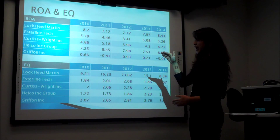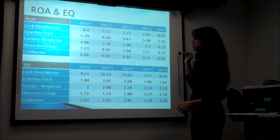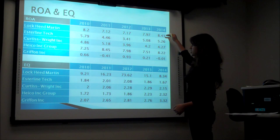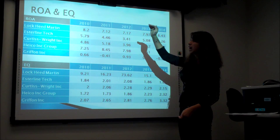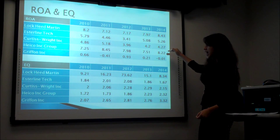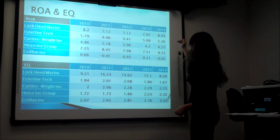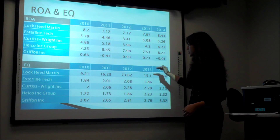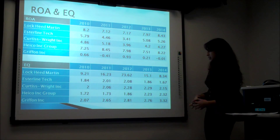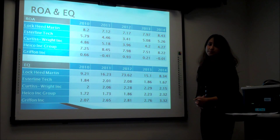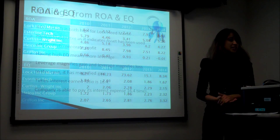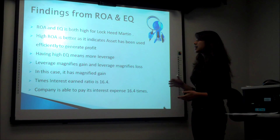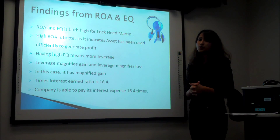These two tables show the ROA — return on asset — and equity multiplier for the five different companies. We can see that Lockheed Martin is leading when it comes to return on asset, followed by HEICO Corp, Easterline Tech, Curtis Wright, and Griffon Inc. Similarly, the equity multiplier of Lockheed Martin is the highest compared to the other four companies. From the table, we found out that both ROA and equity multiplier are driving Lockheed Martin's ROE.